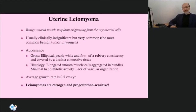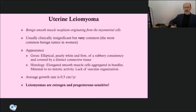Let's talk about leiomyomas. Uterine enlargement most frequently reflects pregnancy or leiomyomas. Less often, enlargement is from adenomyosis, hematometra, an intrauterine mass, or malignancy. Leiomyomas are benign smooth muscle neoplasms that typically originate from the myometrium. They are often referred to as uterine myomas and are colloquially called fibroids. Their incidence among women is generally stated as 20–25%, but is as high as 70–80% in studies using histologic or sonographic examination.